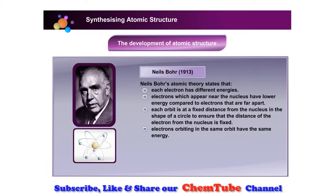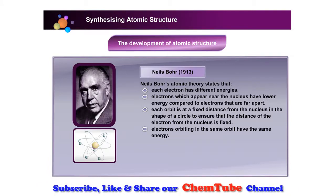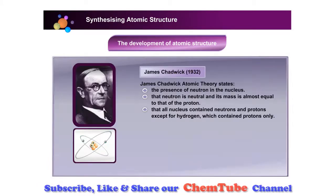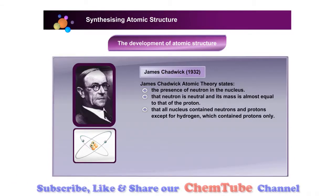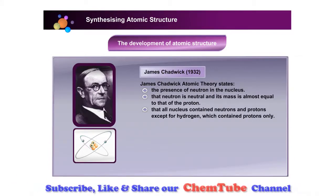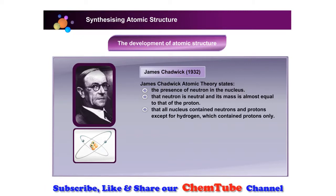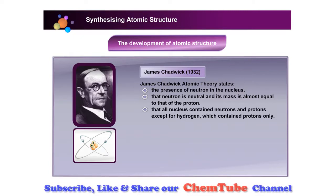This ensures that the distance of the electron from the nucleus is fixed, and electrons orbiting in the same orbit have the same energy. James Chadwick's atomic theory has changed the development of the atomic structure — he solved the weakness of Rutherford's model by discovering the presence of neutrons in the nucleus.